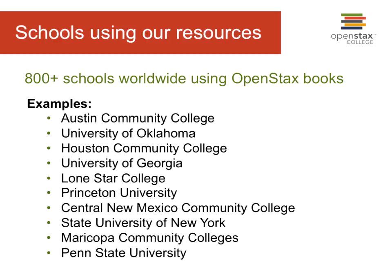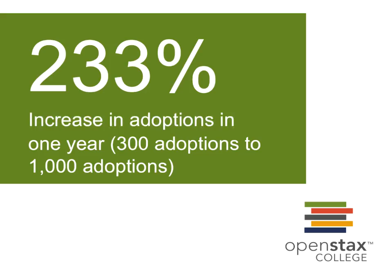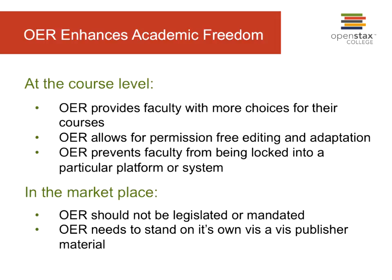Who is using our resources? We have over 800-plus schools worldwide using OpenStax College books, and this number continues to grow every single day — everything from Ivy League universities to private colleges to community colleges. We've been growing at a tremendous rapid rate. Faculty and administrators from across the world have really embraced the concept, and in just one year we increased our number of adoptions by 233%.